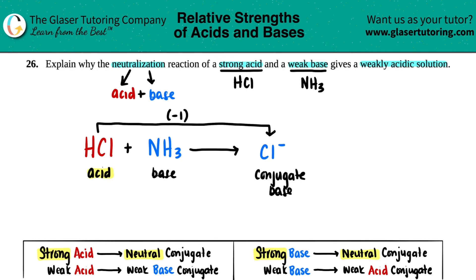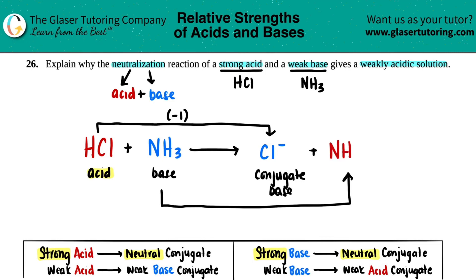Now we do the same for NH3. Cl⁻ plus something on the product side. The base is always the one taking the hydrogen, so you add one more hydrogen. When you add a hydrogen you're adding a plus one charge, so NH3 becomes NH4⁺. Zero plus one is just plus one. NH4 — ammonium — is always going to be a plus one. This is the conjugate acid.